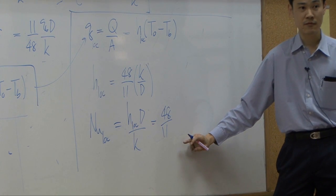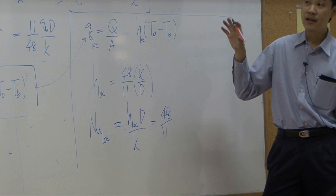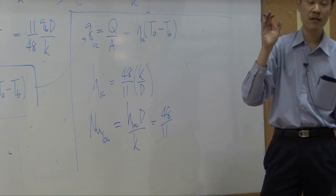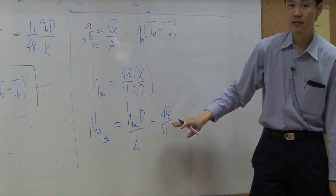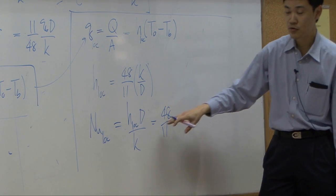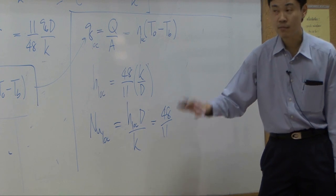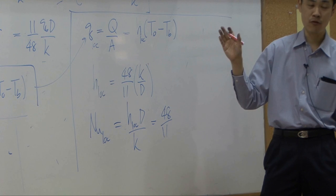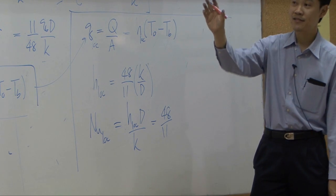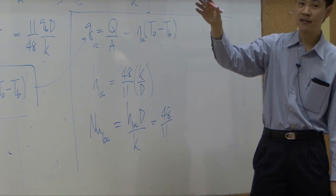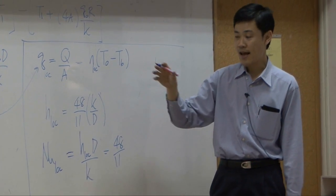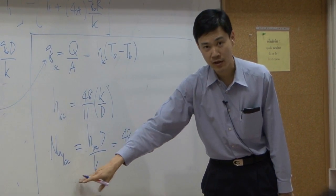So this example shows you how we can use temperature profile and come up with the correlation that shows you Nusselt number. People have done that before. Smart people, of course.